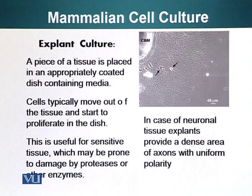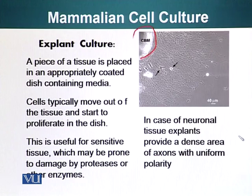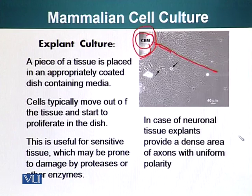In the case of neuronal tissue, explants provide an excellent opportunity for scientists to have a dense area of axons with uniform polarity — for example, polarity of their microtubules. If someone is interested in studying axons, they will place a piece of neuronal tissue, such as a cell body mass. The cells will extend axons outward. If it is a non-neuronal tissue, cells will generally crawl out of the explant and start covering the dish.